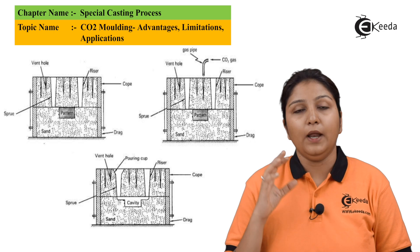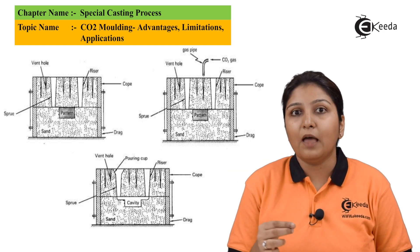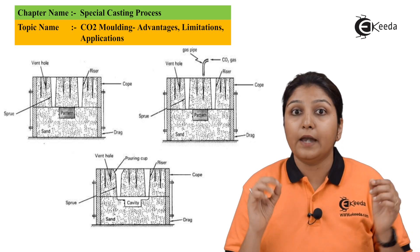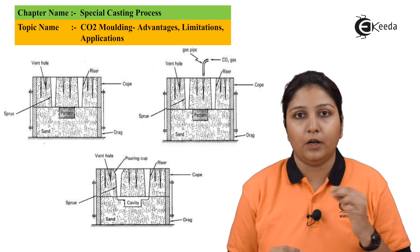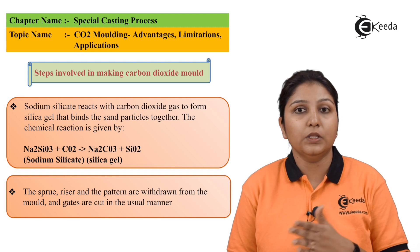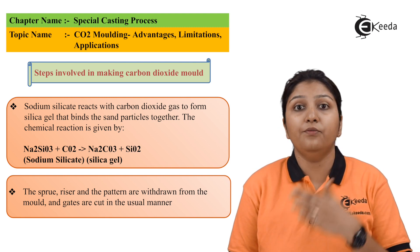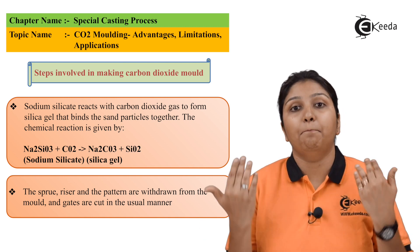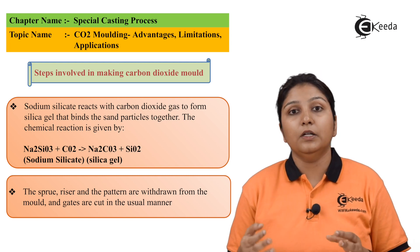The same process is done in the cope as well. You have air vents and a sprue so that additional things can be added and additional air can vent out. The formula shows that sodium silicate reacts with carbon dioxide to form silica gel, which exactly binds the sand properly so that it can hold its shape.